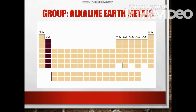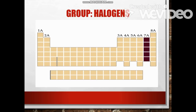Alkaline earth metals include magnesium and calcium, among others. Next are the halogens, under Group 7A. The elements in this family are fluorine, chlorine, bromine, iodine, and astatine. Halogens have seven valence electrons, which explains why they are the most active non-metals. They are never found free in nature and react with alkali metals to form salts.